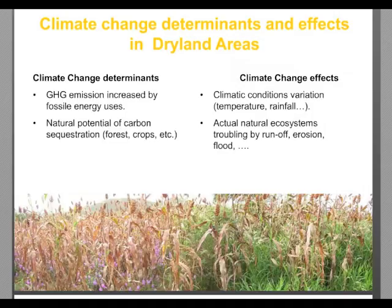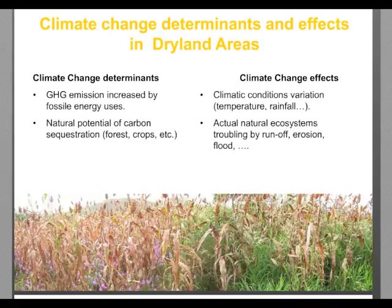We have decided to divide climate challenges in dryland areas into two different issues. On one hand, we talk about climate change determinants: carbon emission increase by fossil energy users and the natural potential of carbon sequestration due to CA. On the other hand, we talk about climate change effects — how CA can act on the consequences of climate change such as climatic condition variation and ecosystem problems from run-off and erosion.